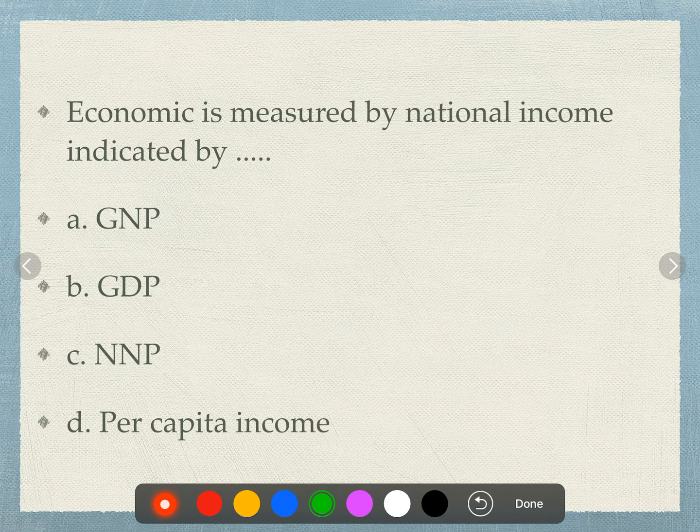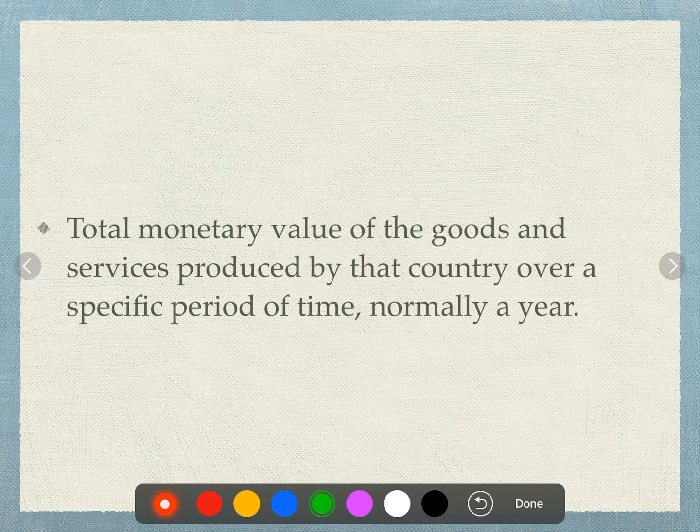The economy is measured by national income indicated by GDP. GDP is the total monetary value of goods and services provided by that country over a specific period of time, normally one year. The national value of goods is the amount of goods and services produced within a country.